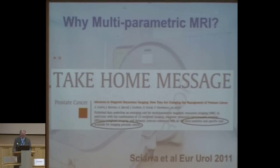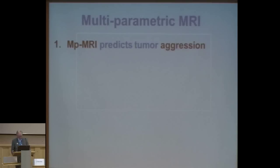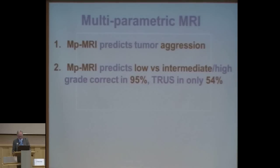Why multi-parametric MRI? This is a paper in European Urology last year by four urologists and three radiologists. It is a review of the literature of the past two years, and the conclusion is that multi-parametric MRI is the most sensitive and specific technique available for imaging prostate cancer. Multi-parametric MRI predicts tumor aggression. It predicts low versus intermediate-to-high grades correctly — separating the bad guys from the good guys — in 95%, while TRUS does this in only 54%.